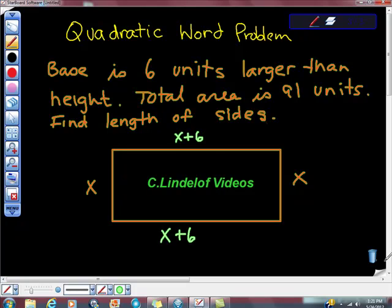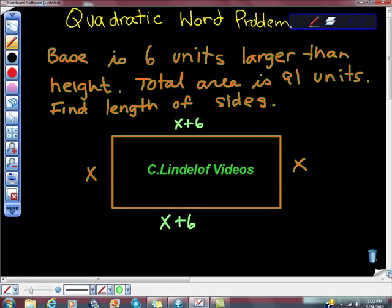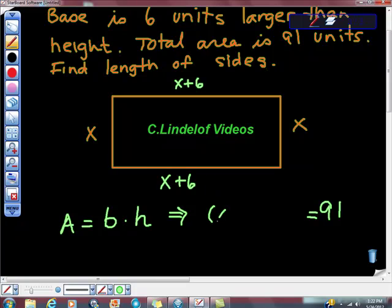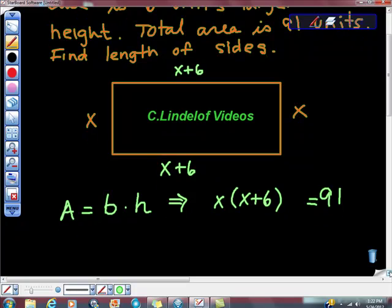We could find a lot of stuff out here, couldn't we? So it says here that the base is six units. The total area is 91. Well, what's the area of a rectangle? Base times height. So we have area, but we know our area is 91, isn't it? And the base is x. Let's do it this way. The height is x. The base is x plus six, isn't it? Now what?